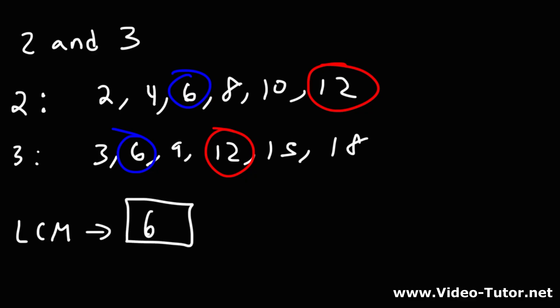That's the answer that we're looking for. Sometimes when you multiply the two numbers, it may give you the LCM, which in this example, 2 times 3 will give you the LCM of 6.